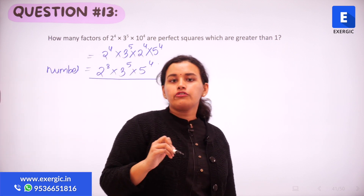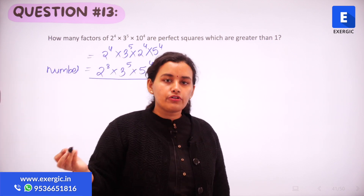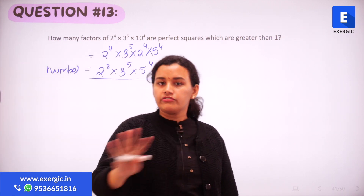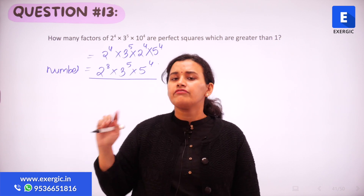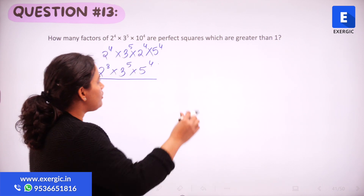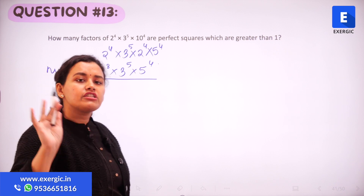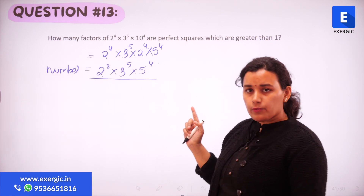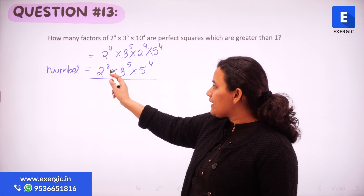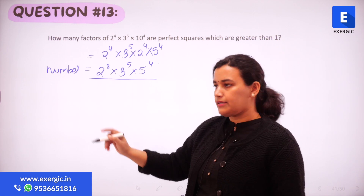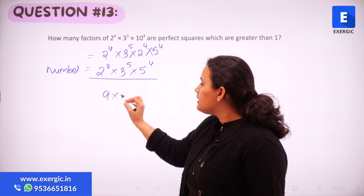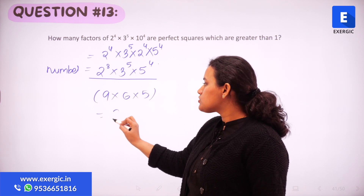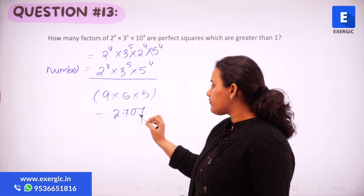Now if we had to find out the total number of factors this number has without any constraints — forget about the perfect square condition — how do we do it? We add 1 to each of the powers and then multiply them. So we will have 9 into 6 into 5, which gives us 270 factors.